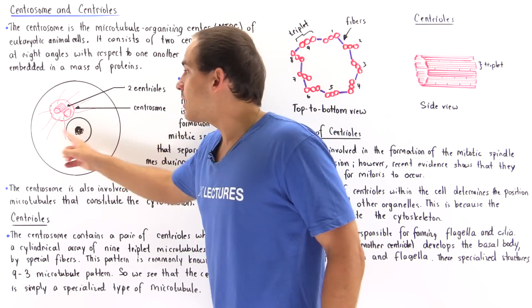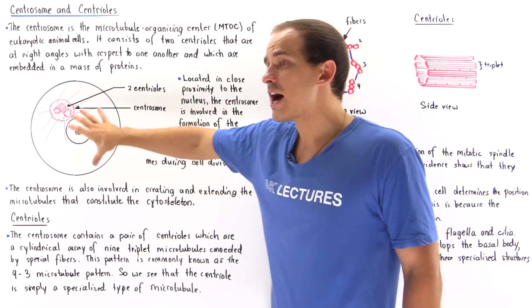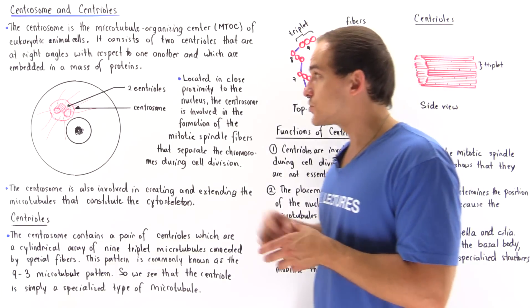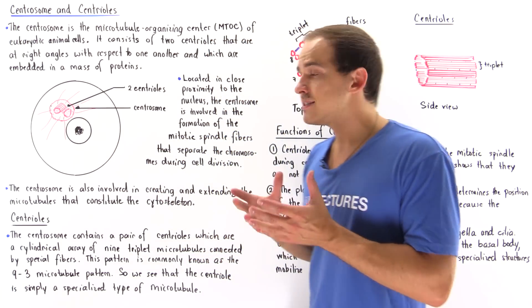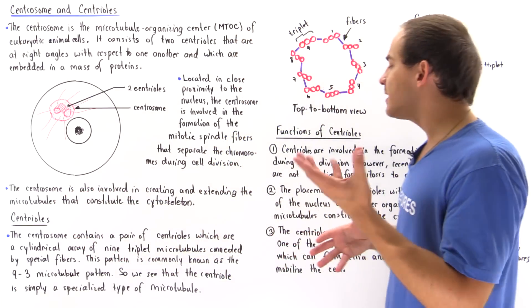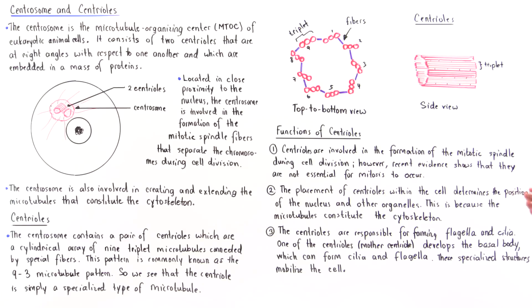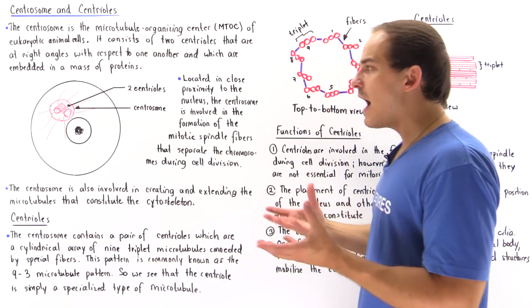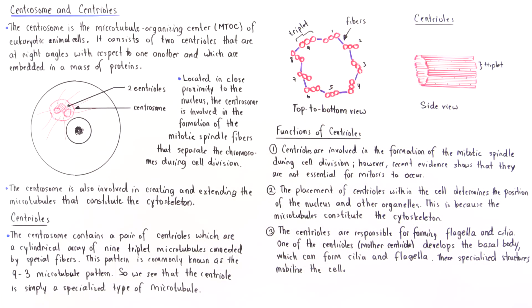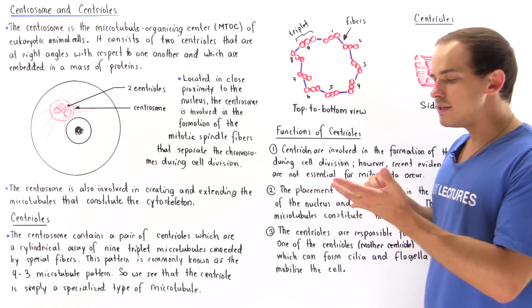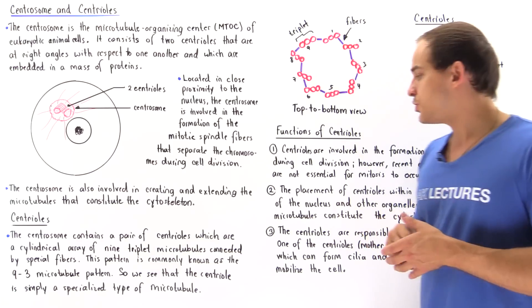That's exactly why the centrosome that contains the centrioles is found right next to our nucleus. In fact, inside neuron cells, the location of our centrosome basically determines into which direction the axon will grow on any given neuron cell. This makes sense because the microtubules are the largest and the thickest components, the thickest fibers of our cytoskeleton. Remember, the cytoskeleton is composed of three different types of fibers: microfilaments, intermediate filaments, and our microtubules.